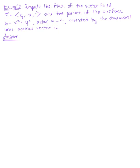Compute the flux of the vector field defined by the components y, negative x, 1 over the portion of the surface z equals x squared plus y squared, below the plane z equals 4, oriented by the downward unit normal vector n. Looking at our surface, we see that it is explicitly defined, so we want to recall the vector surface integral for an explicitly defined surface.